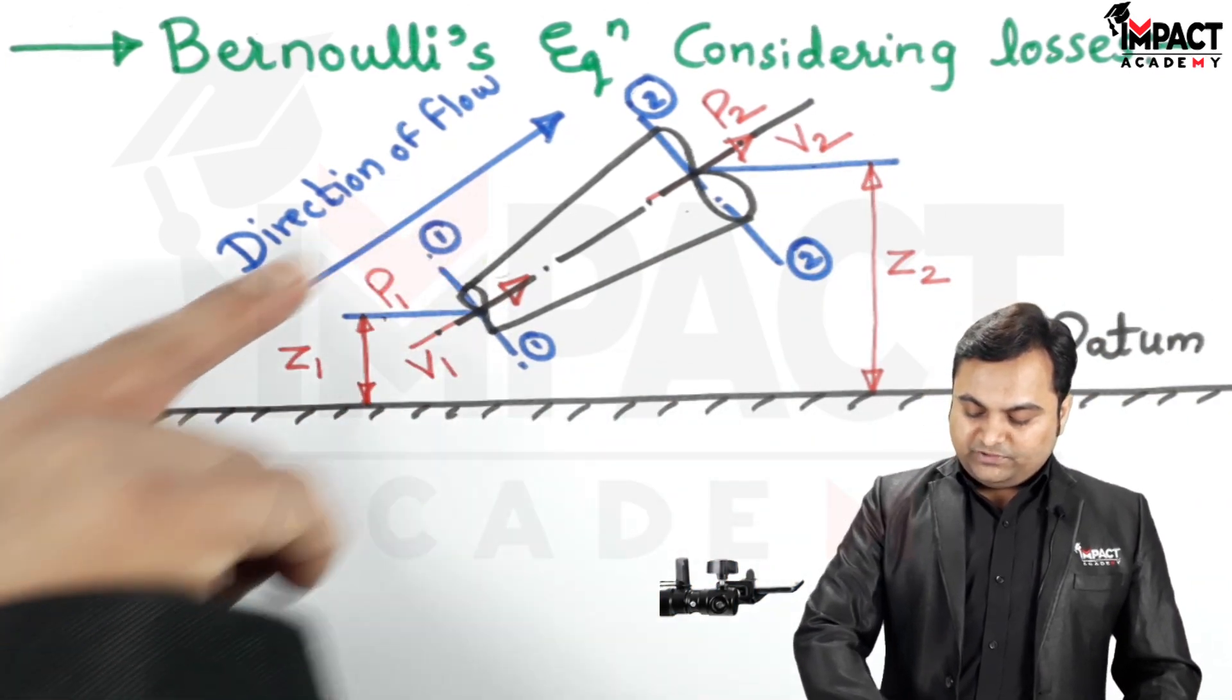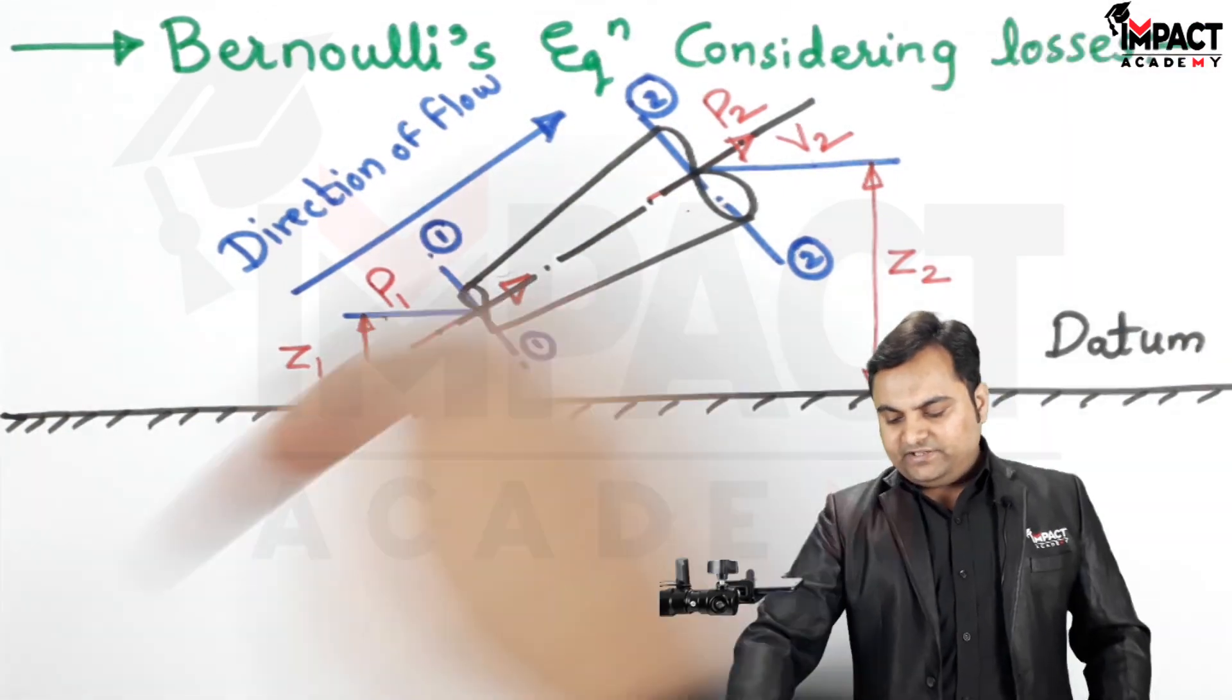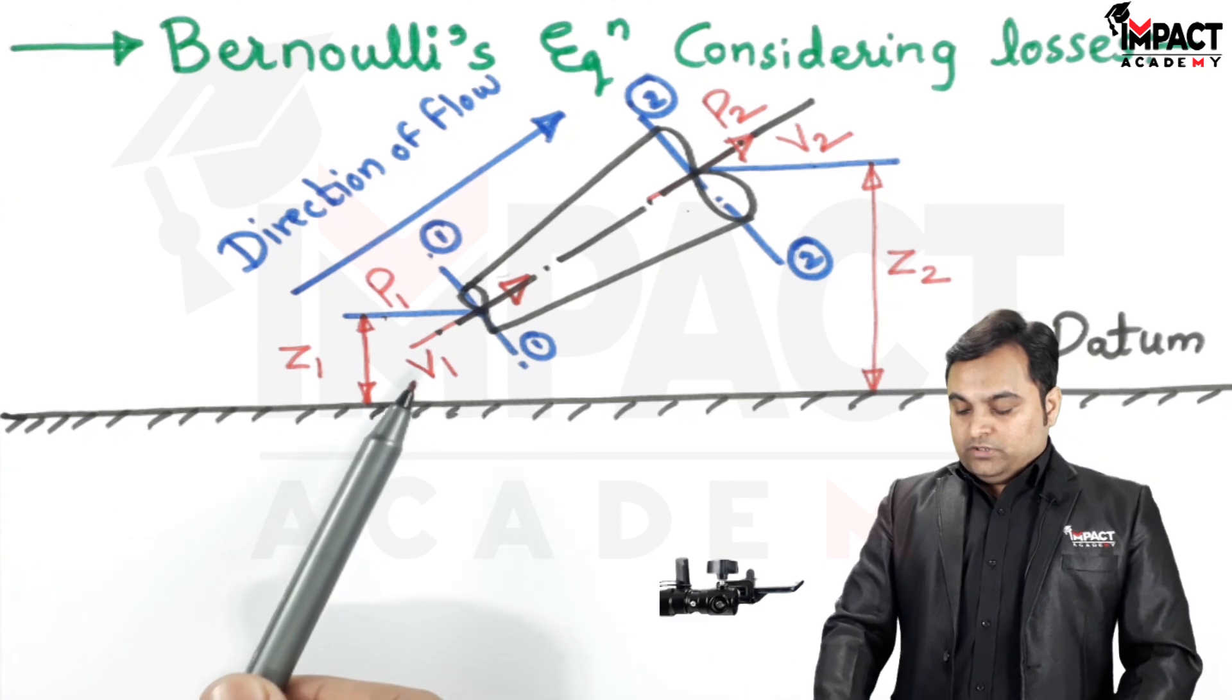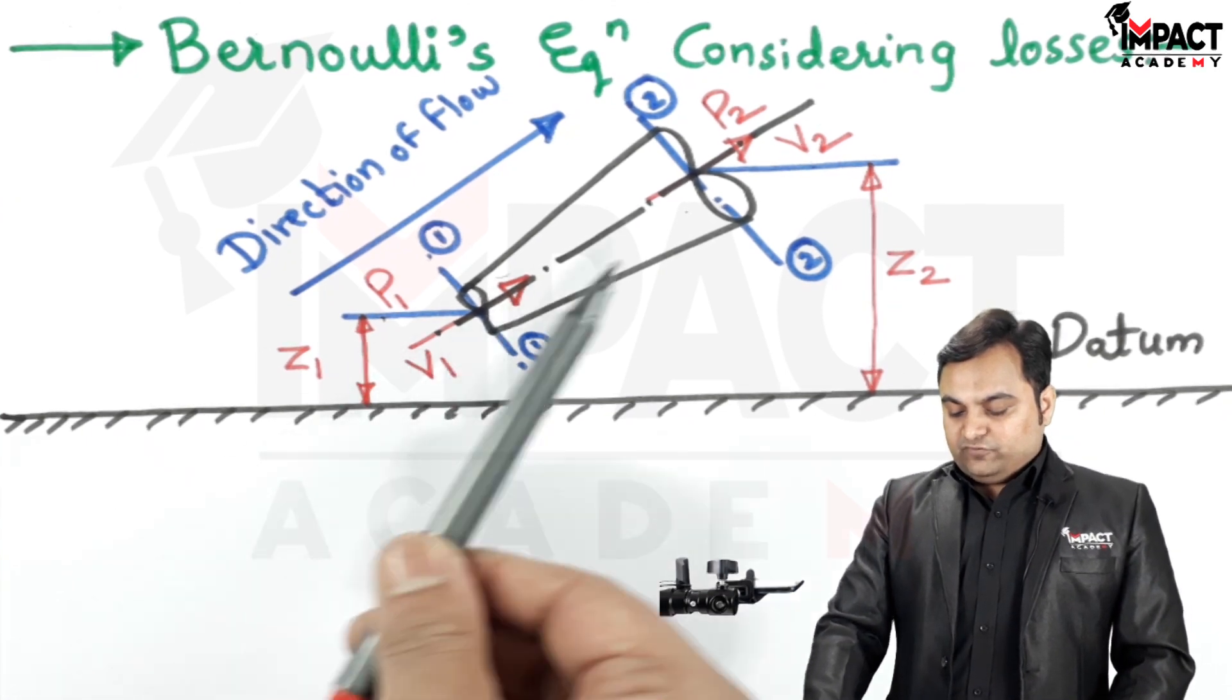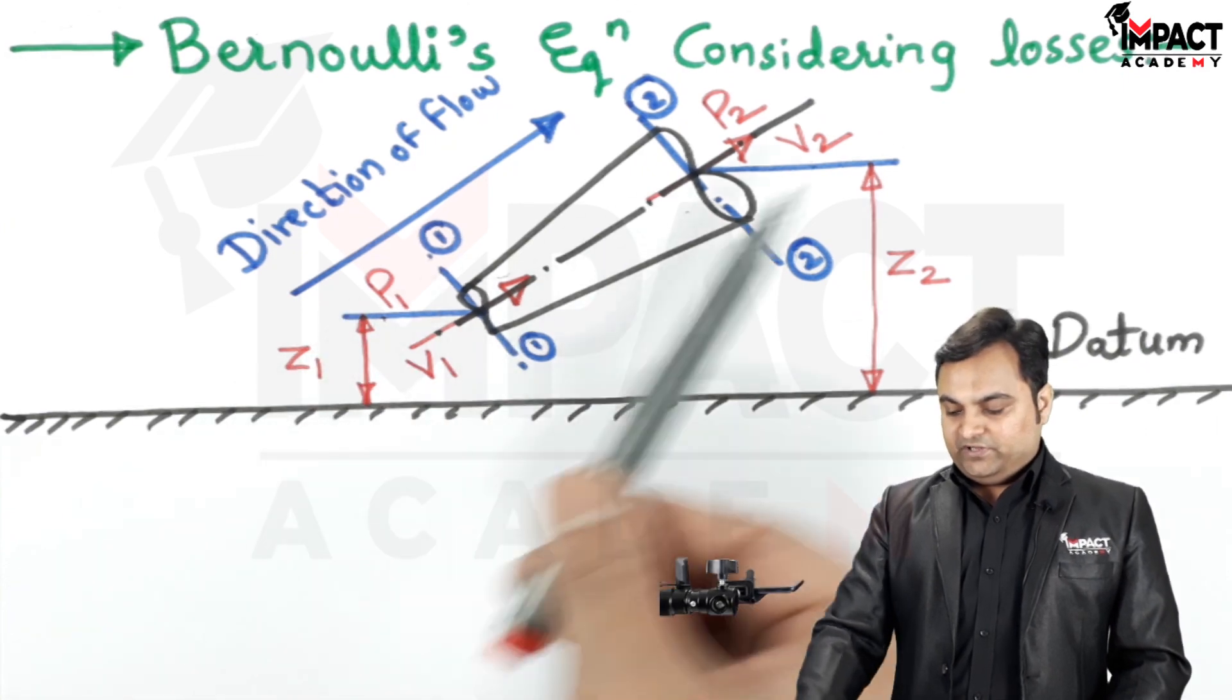The fluid, I have assumed the direction is upward, that is the direction of flow. It can even be in the downward direction. The fluid which is flowing is having velocity v1 at section 1 and the pressure is p1. At section 2, velocity is v2 and the pressure is p2.